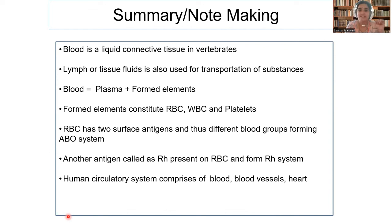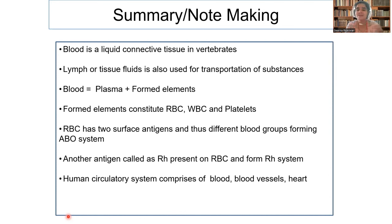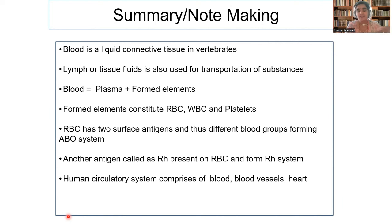This is our last video regarding body fluids and circulation. Blood is a liquid connective tissue present in vertebrates. Lymph or tissue fluids are also used in transportation of substances. Blood is plasma plus formed elements. Blood minus formed elements is called plasma. The formed elements in blood are RBC (erythrocytes), WBC (leukocytes), and platelets. RBC has two surface antigens and different blood groups in the ABO blood group system. Another antigen — RH — is also present on the RBC, necessary for identifying whether the person is RH positive or negative.